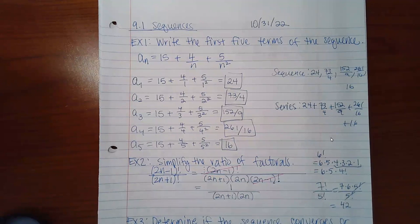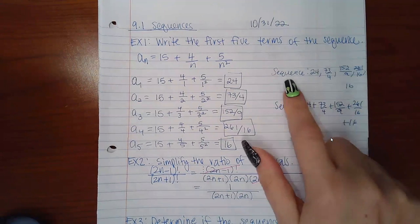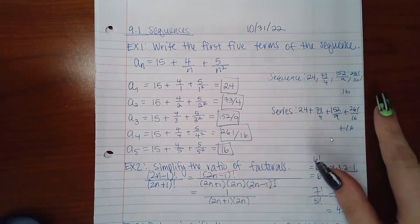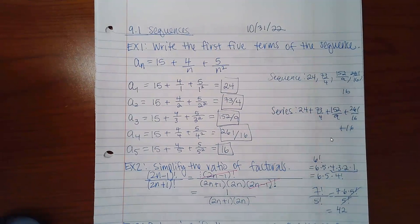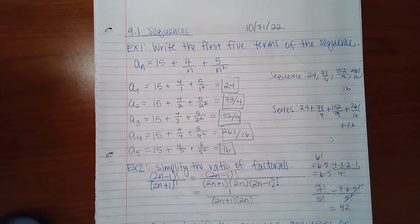The first thing I addressed in class was a question in one of the discussions about the difference between a sequence versus a series. A sequence is literally a list of terms — you usually separate them with a comma. A series is the sum of the terms, so there are no commas between terms; you're putting plus signs and eventually adding them together. A series is the sum of the terms, and a sequence is just the terms in list form.